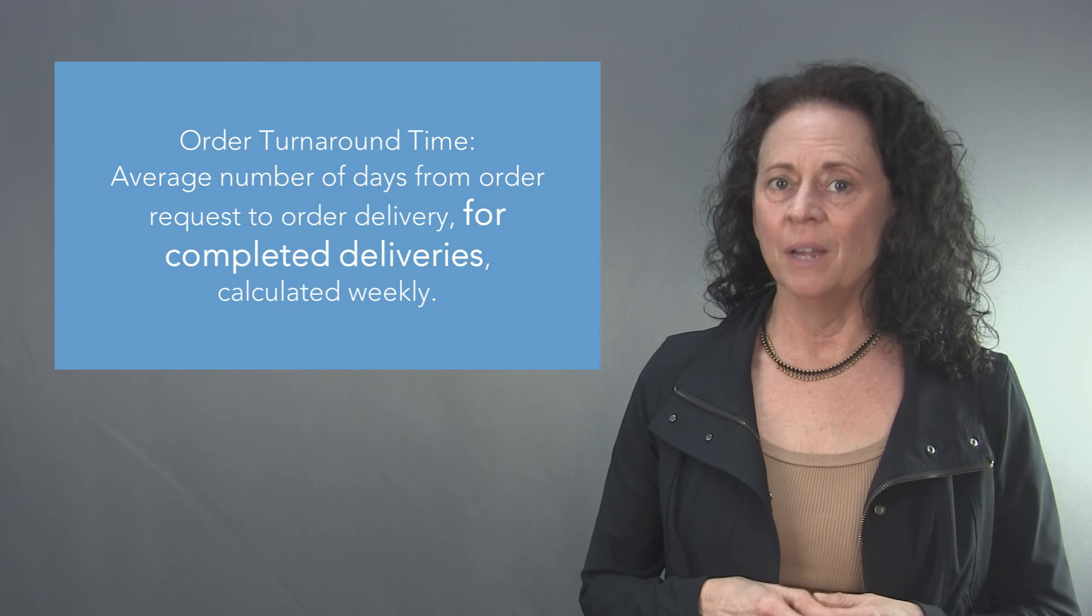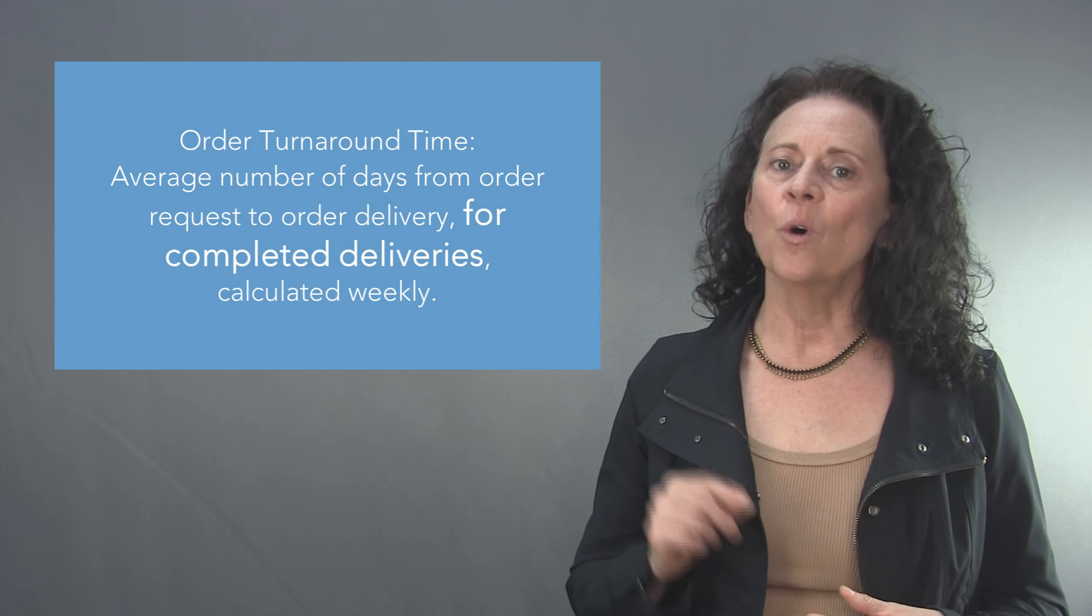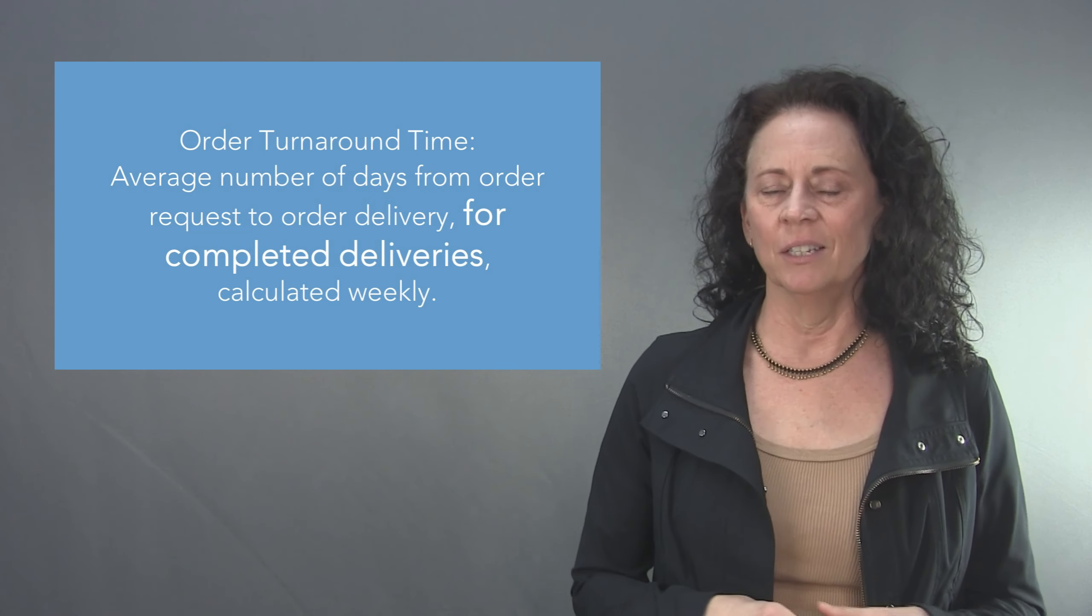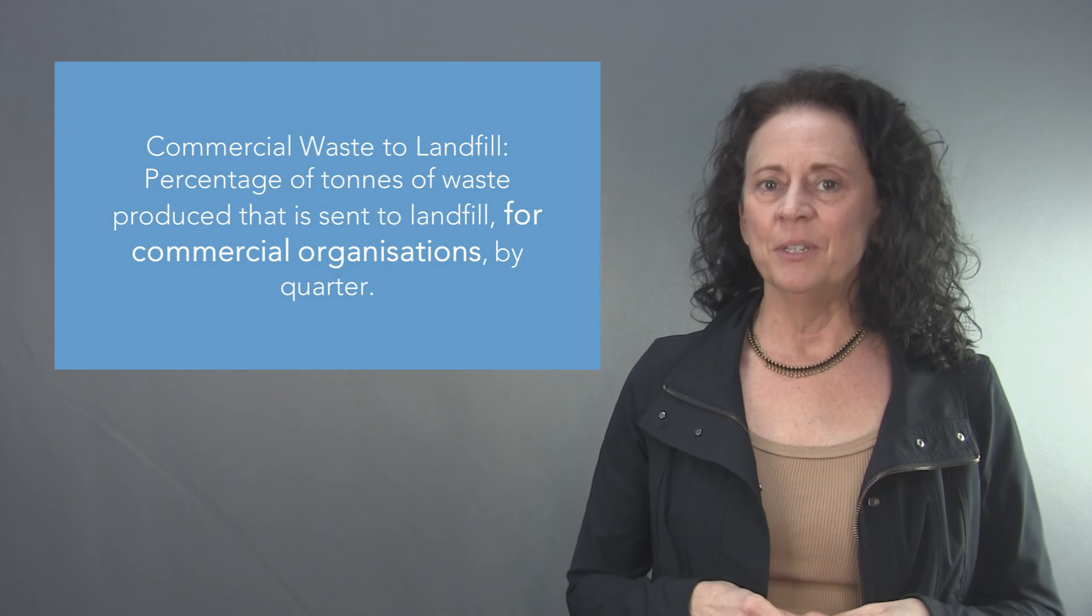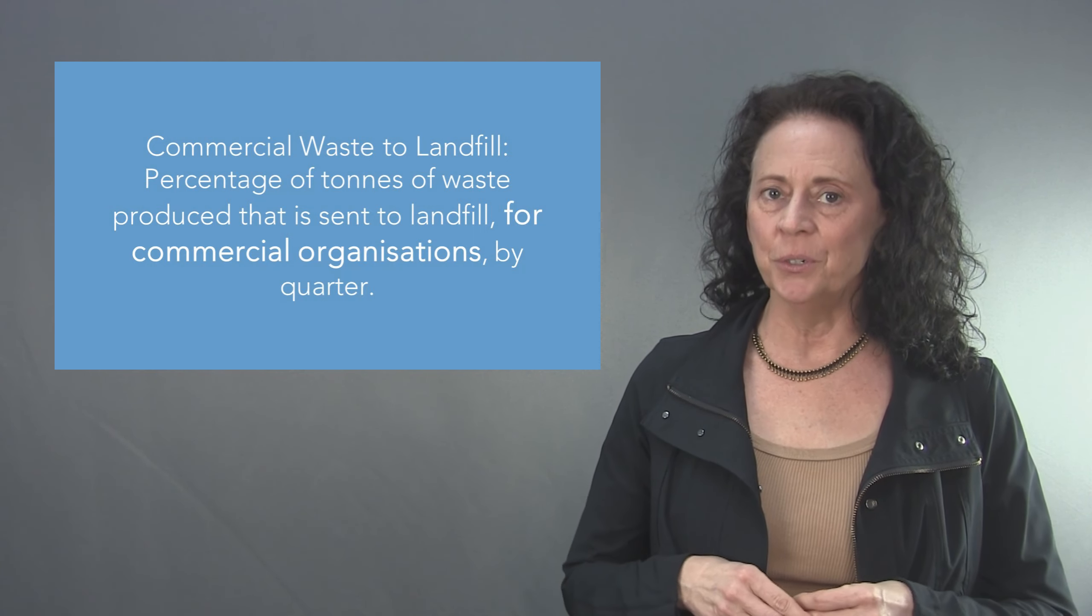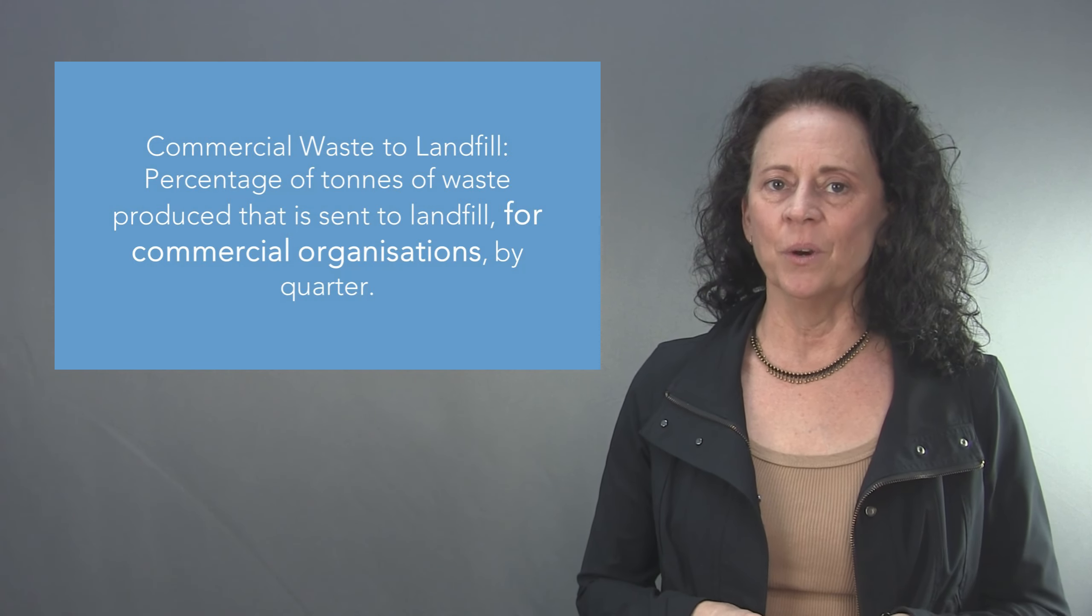And for a couple more measures the scope data items here are also in bold. For order turnaround time, the average number of days from order request to order delivery for completed deliveries calculated weekly. Or for commercial waste to landfill, the percentage of tons of waste produced that is sent to landfill for commercial organisations by quarter. Now not every measure has a scope data item but it is essential to give it some thought just in case you discover the measure has more meaning if it's a little less diluted.